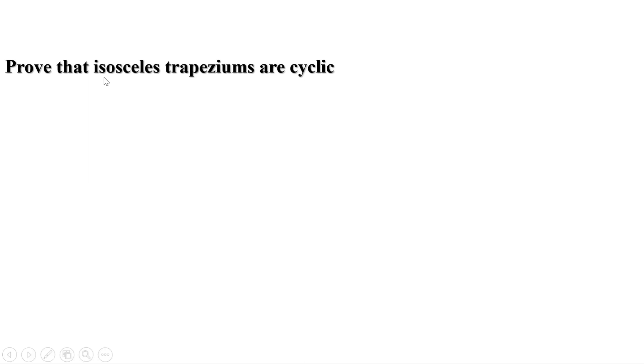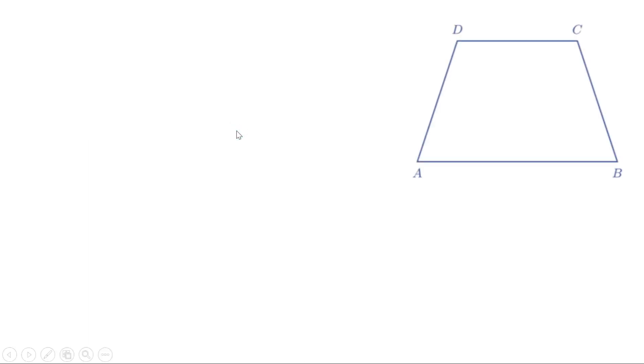Now let us do a problem: prove that isosceles trapeziums are cyclic. What is an isosceles trapezium? When one pair of opposite sides of a quadrilateral are parallel, it is called a trapezium. If the other pair of opposite sides are equal, then it is called an isosceles trapezium. So in every isosceles trapezium, one pair of opposite sides are parallel and the other pair are equal. We have to prove that isosceles trapeziums are cyclic, so it is enough to prove the opposite angles are supplementary.